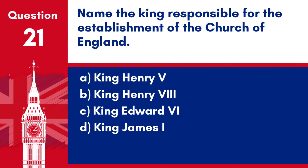Question 21. Name the king responsible for the establishment of the Church of England. a. King Henry V. b. King Henry VIII. c. King Edward VI. d. King James I. Answer: b. King Henry VIII was responsible for the establishment of the Church of England in the 16th century, breaking away from the Catholic Church.